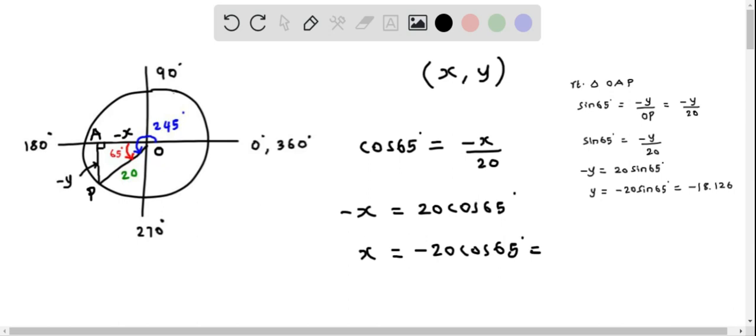We plug this into the calculator and when we do that we get the value of X as negative 8.452.